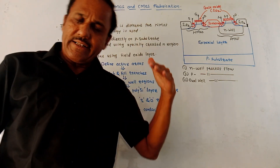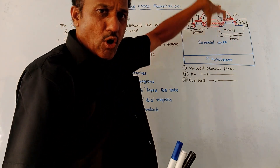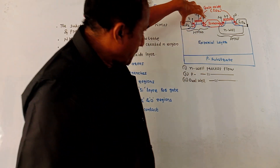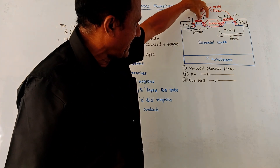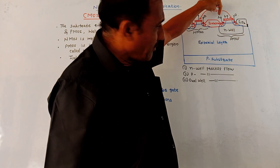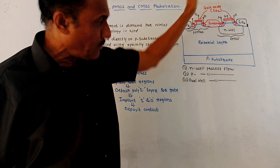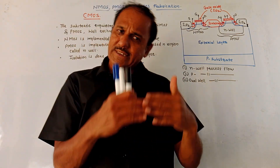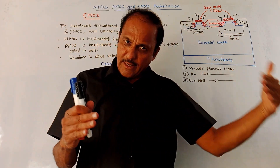Next is CMOS fabrication. In CMOS, both NMOS and PMOS devices exist together. This is the cross-sectional view of a CMOS IC. The NMOS portion uses N-plus regions with source, gate, and drain terminals. Some isolation is provided, followed by the PMOS device which also has source, gate, and drain terminals. The isolation between NMOS and PMOS is provided using silicon dioxide layers. The substrate requirement is different for both: P-type for NMOS and N-type for PMOS.